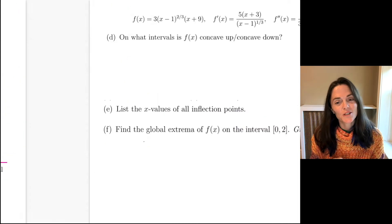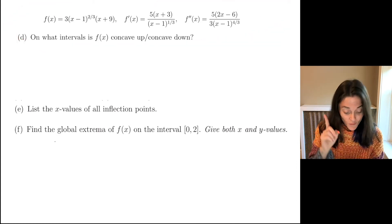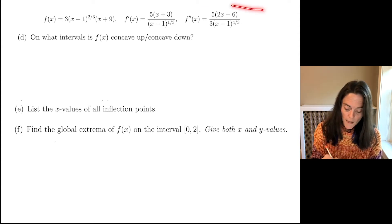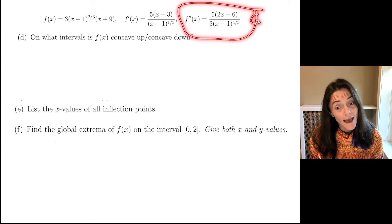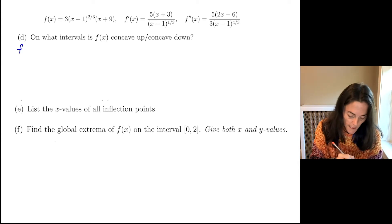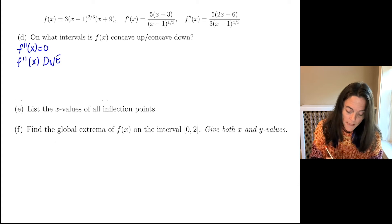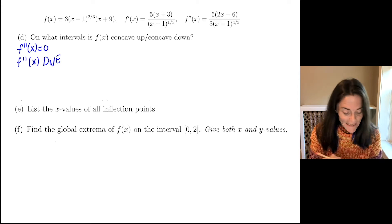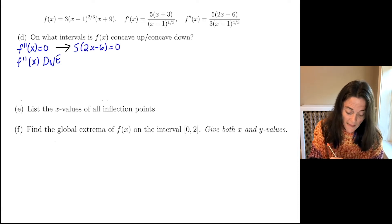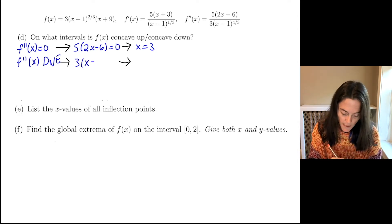Now we have more parts for this problem. The next part deals with concavity. I have recopied our function, first derivative, and second derivative. On what intervals is the function concave up or concave down? Here, we want to use the second derivative. The potential places where the function switches concavity are where the second derivative is 0 or does not exist. The second derivative is 0 only when the numerator is 0, so we have 5 times (2x minus 6) equals 0, which happens at x equals 3. The second derivative does not exist when the denominator is 0, so (x minus 1) to the 4/3 equals 0, which is when x equals 1.